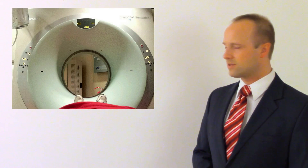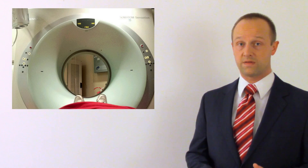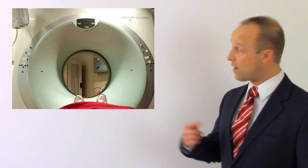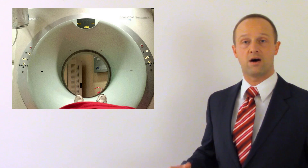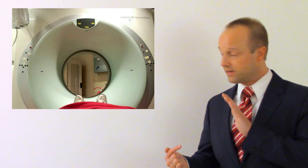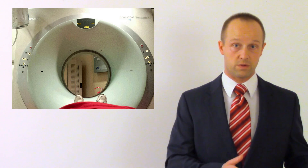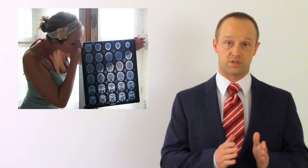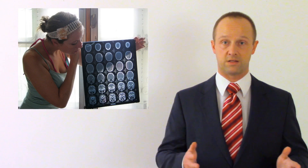A CT scanner looks pretty similar to an MRI scanner, but instead of a big magnet it uses a source of x-rays. The x-ray source moves round and round the patient in a full circle, with an x-ray detector opposite it. These move around the patient inside the cylinder, taking scans straight through the patient's body. A computer then turns these into individual slices — like the MRI scanner — and can also turn that into a 3D image.